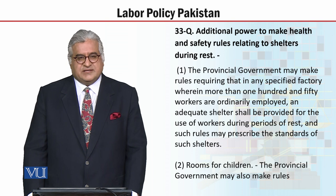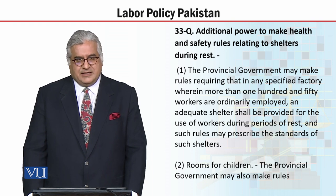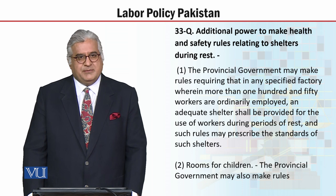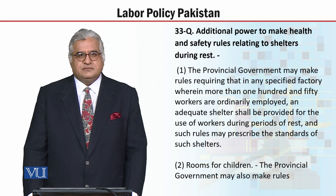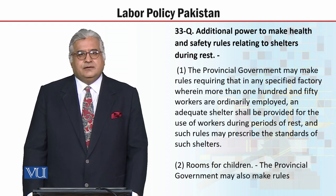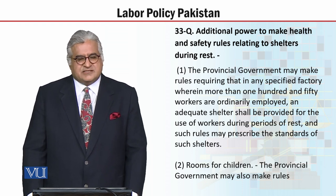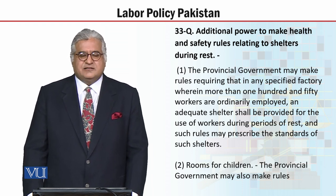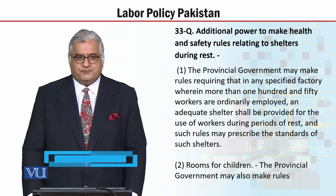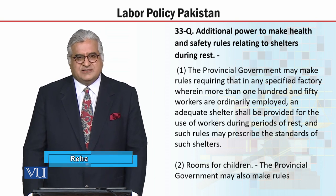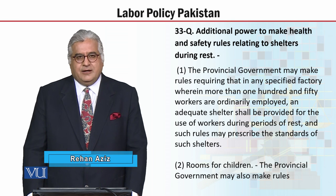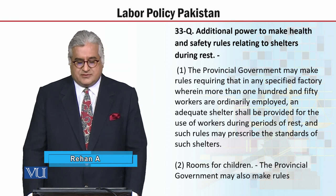Section 33Q, subsection 1. The provincial government may make rules. Again, this is subordinate legislation by the provincial government. Primary legislation, which is the Factories Act 1934, is a product of the legislature.